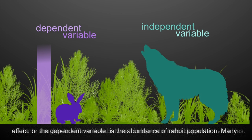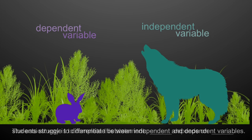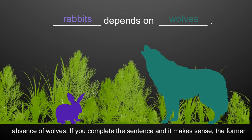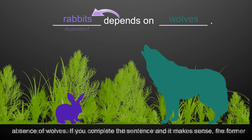Many students struggle to differentiate between independent and dependent variables. The easiest way is to complete this statement: blank depends on blank. In our example, the abundance of rabbits depends on the presence or absence of wolves. If you complete the sentence and it makes sense, the former is the dependent variable while the latter is the independent variable.